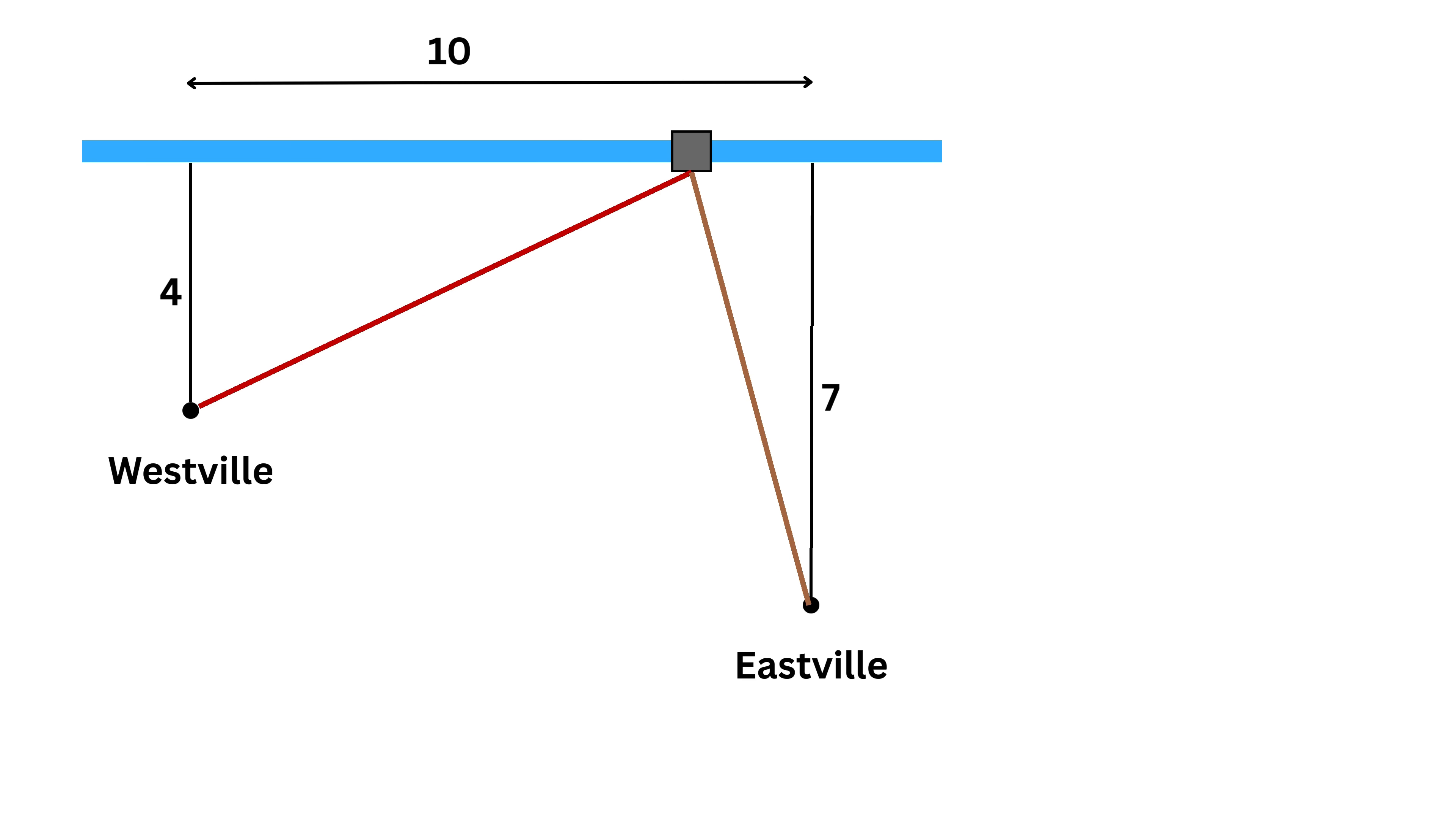What if we put the station very close to Eastville, say at nine miles from Westville and just one mile from Eastville? On solving, we get the length as sixteen-point-nine miles. So as we can clearly see, the total pipe length depends on where you place the station. Some positions give a smaller total, others give a larger one. The challenge is to find the exact spot that gives the absolute shortest total pipe length.